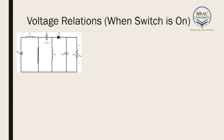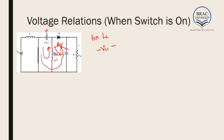Now considering switch on and off conditions for inductor L2. When the switch is on, the capacitor which was charged when the switch was off has to get discharged. It cannot discharge through the diode loop, so it discharges through this loop. Applying KVL, we get minus VC1 plus VL2 equals 0, or VL2 equals minus VC1. We put this as equation number 3.